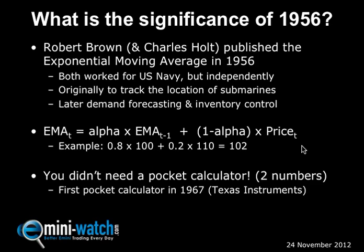Easy mental arithmetic to do. If you're using a 10 or 25 period simple moving average, you'd have to add together 10 or 25 different numbers and divide accordingly. With an exponential moving average, you only need two numbers. In the days before the first pocket calculators were available, this was a godsend.